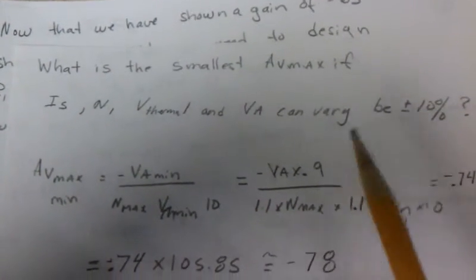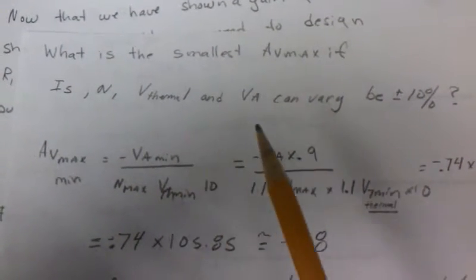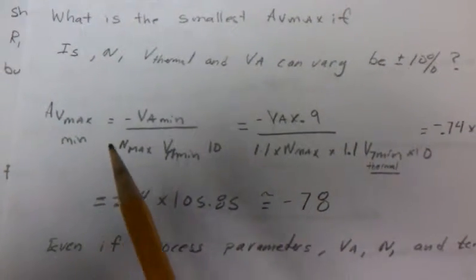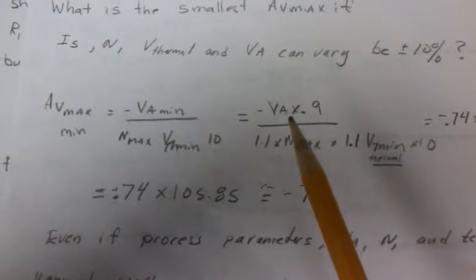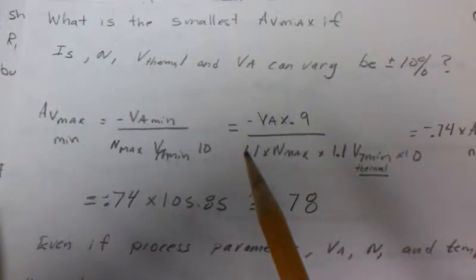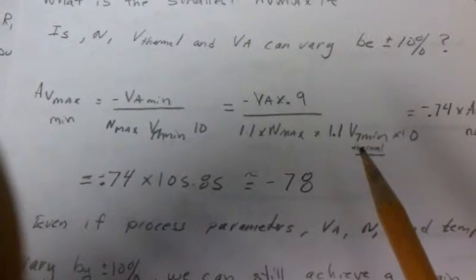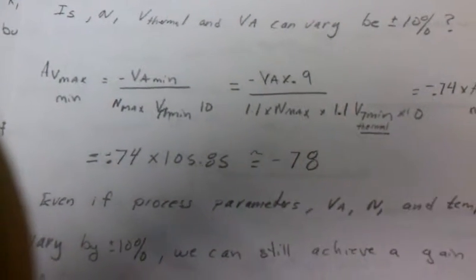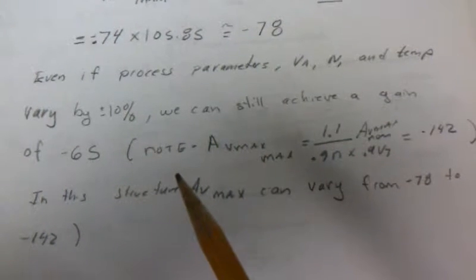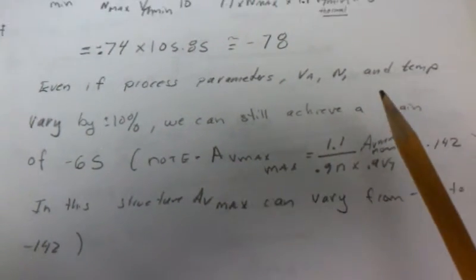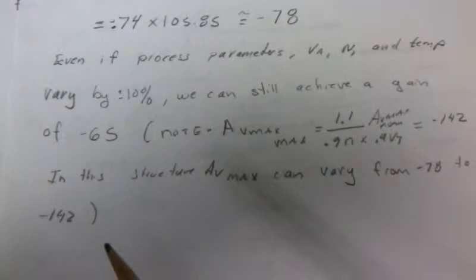Now that we know that, what's the smallest AV max if IS, thermal voltage, and VA can vary by 10 percent? When we start looking through these equations, obviously VA max by 0.9 will be the minimum, and maximum thermal voltage should give us the minimum possible gain which in this analysis is minus 78. So even if these process parameters vary, I should still be able to get 65, so it's still worth working out.